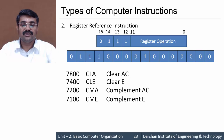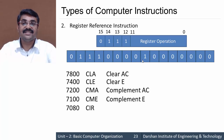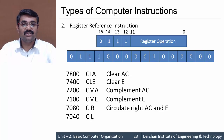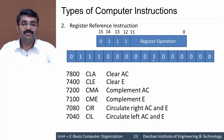Changing the bit further, code 7080 is designated as CIR — circulate right AC and E, meaning the content of the accumulator and flip-flop E are circulated (rotated) to the right. Code 7040 is designated as CIL — circulate left AC and E, rotating the accumulator content and E to the left. These circular shift operations were discussed earlier.